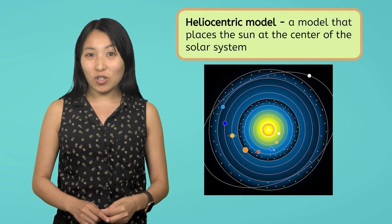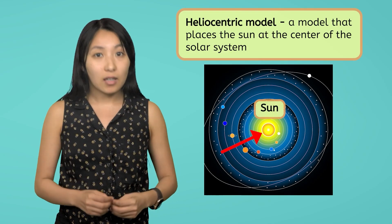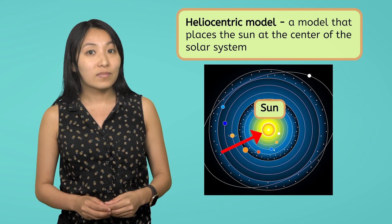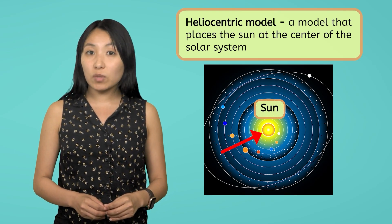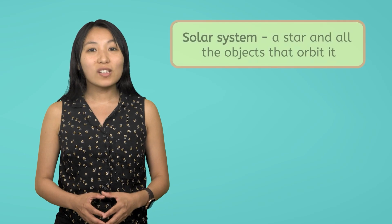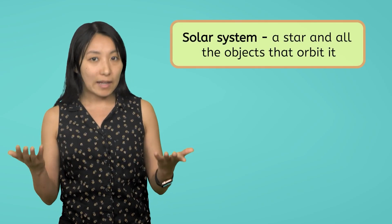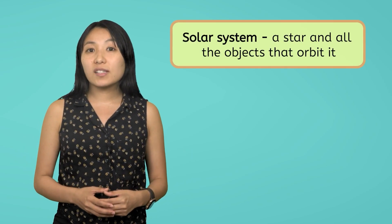The heliocentric model, where the Sun, not the Earth, was at the center. This has been acknowledged as the first true model of the solar system as we know it today. A solar system consists of a star, like our Sun, and all the objects that orbit it.